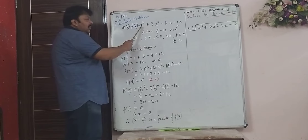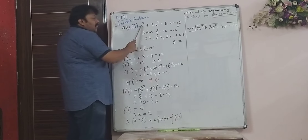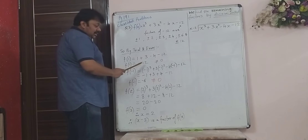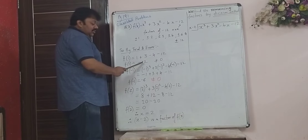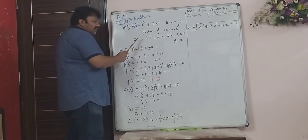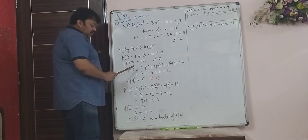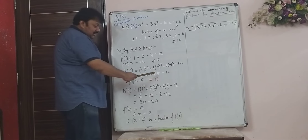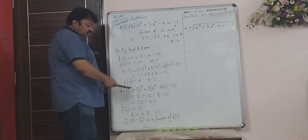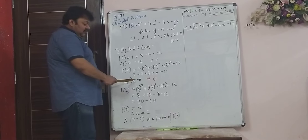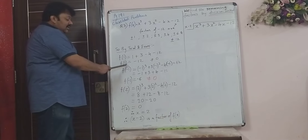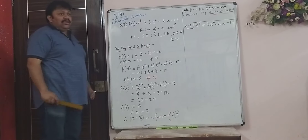We substitute f(1): in this equation we substitute x = 1. When you substitute, you get minus 12, it is not equal to 0. After that we try minus 1. When we substitute minus 1 and check, f(-1) = -6, it is not equal to 0.